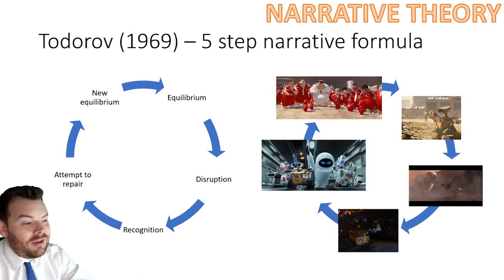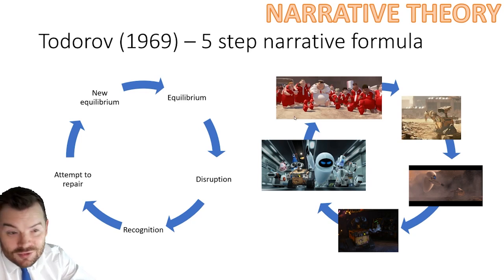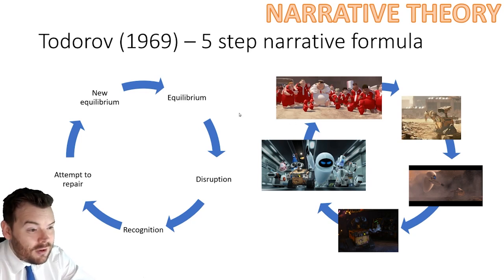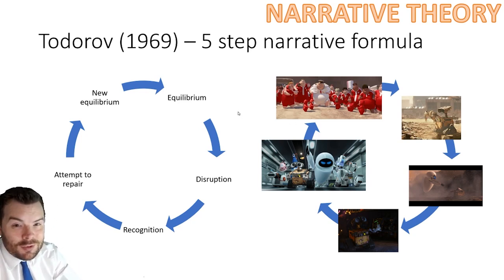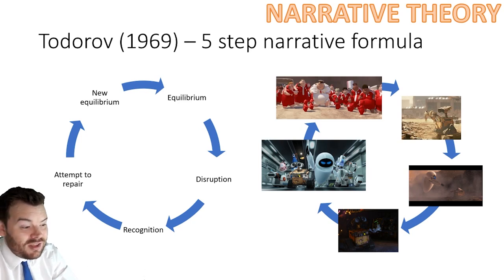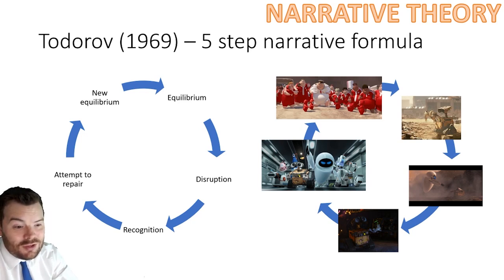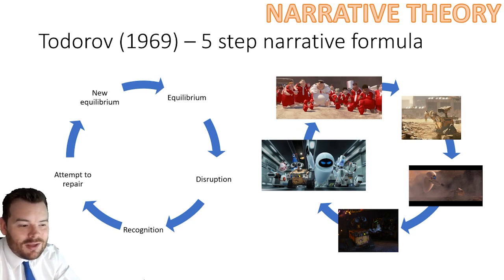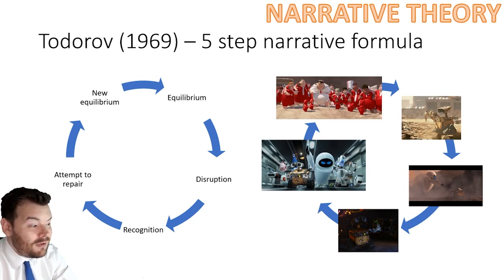That would then potentially re-spiral if there were ever sequels — but that's the five-step narrative formula. Most TV and film shows you're going to see or have heard of will follow this, and as soon as you notice it you're almost waiting for the next bit, knowing full well that something good is going to happen eventually.